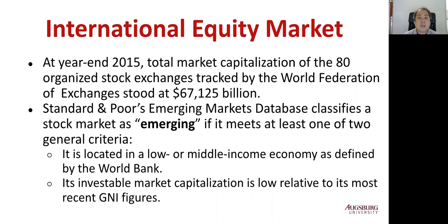The S&P Emerging Market Database classifies stock markets as emerging if they meet at least one of two criteria: they are located in a low or middle income economy as defined by the World Bank, or their investable market capitalization is low relative to their most recent GNI (Gross National Income) figures. Typical emerging markets include the BRICS — Brazil, Russia, India, China — among many others.